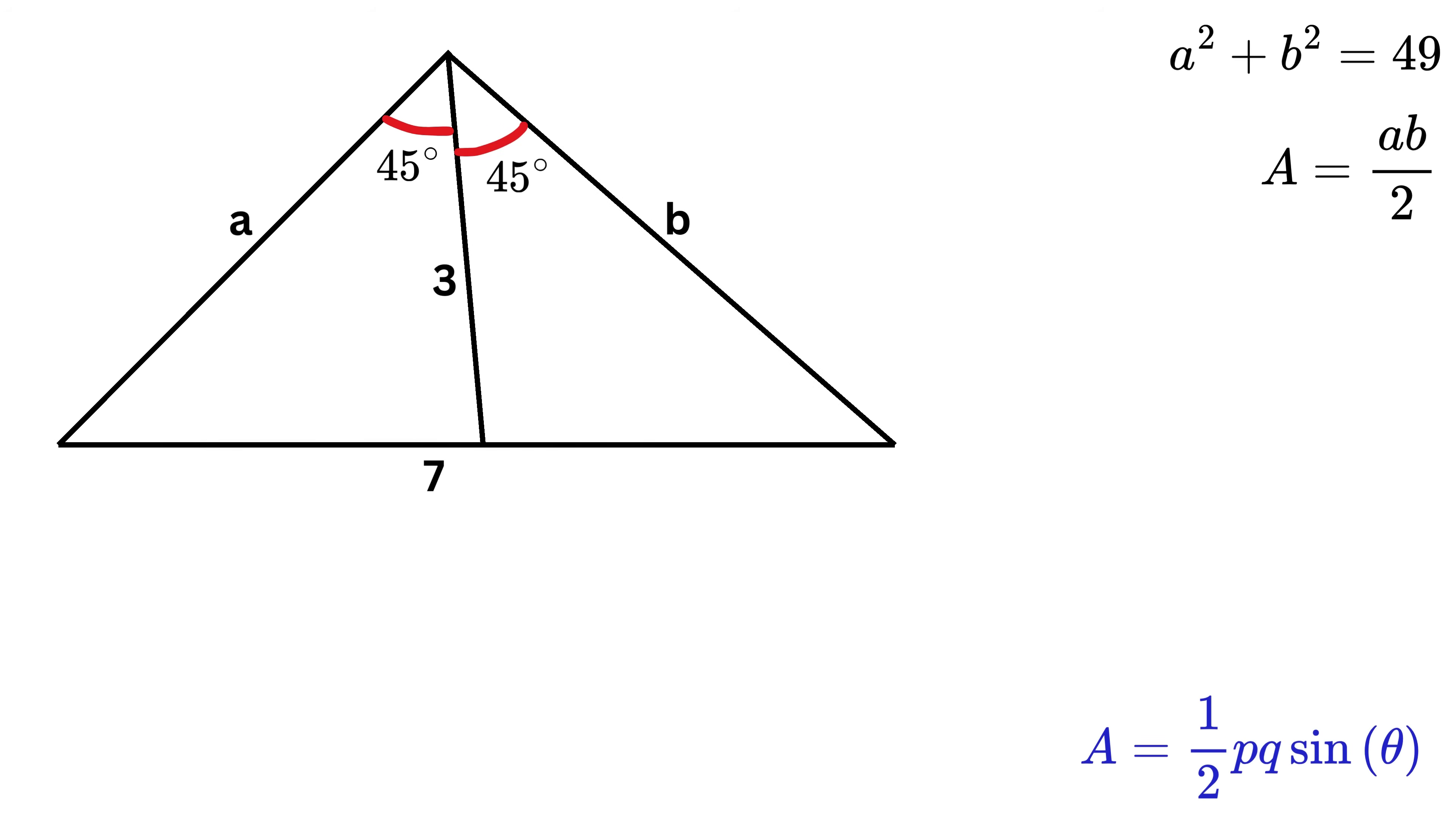So if this is clear, then what will be the area of this smaller triangle on the left side? This side length is A, and this is three, and this angle is 45 degrees. So its area will be equal to half times three times A times sine of 45 degrees. Sine 45 degrees equals one over square root of two. So the area will be equal to 3A over 2 root 2.